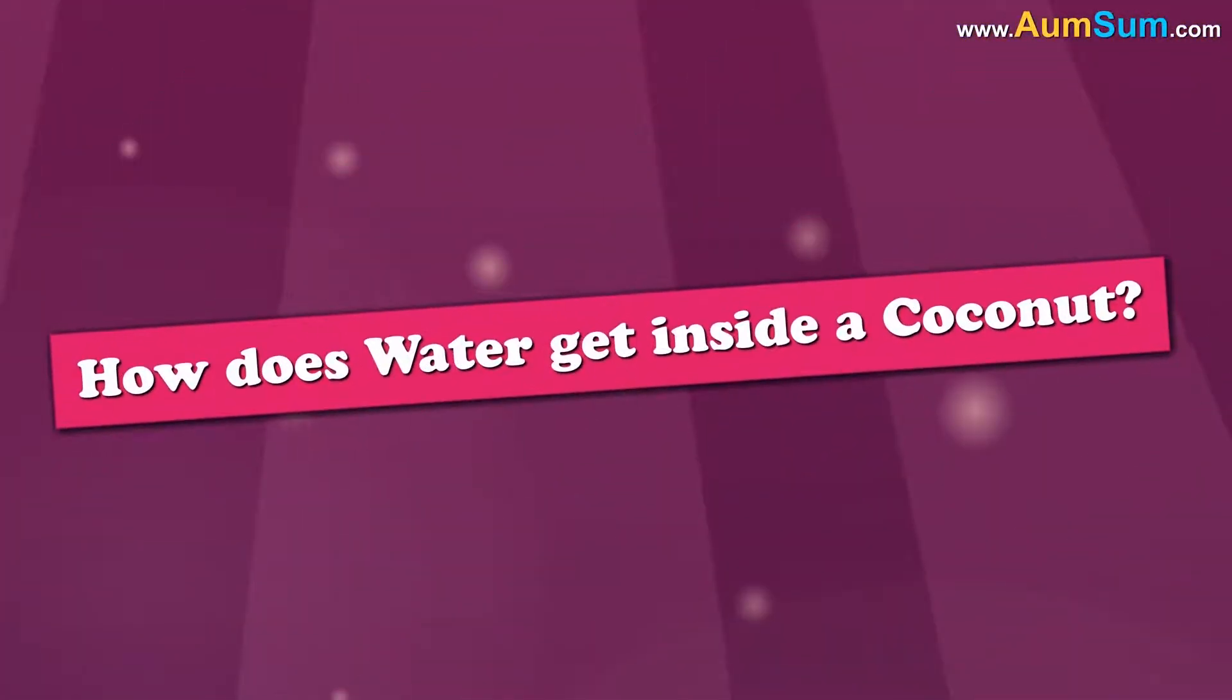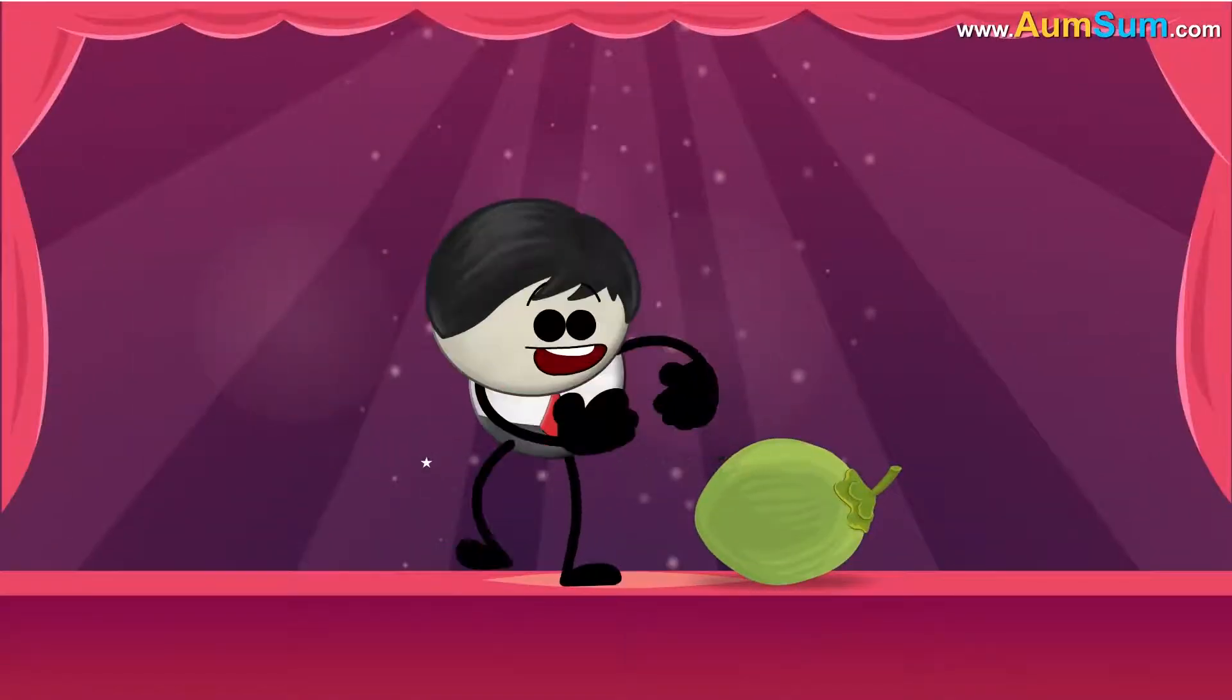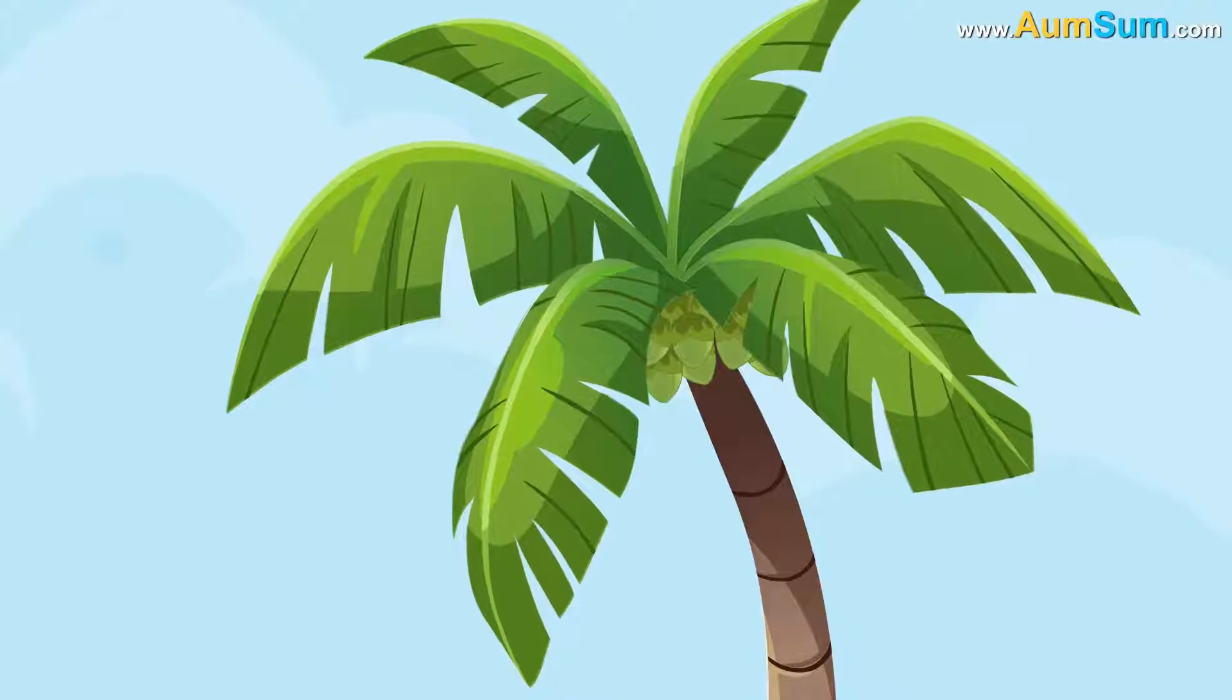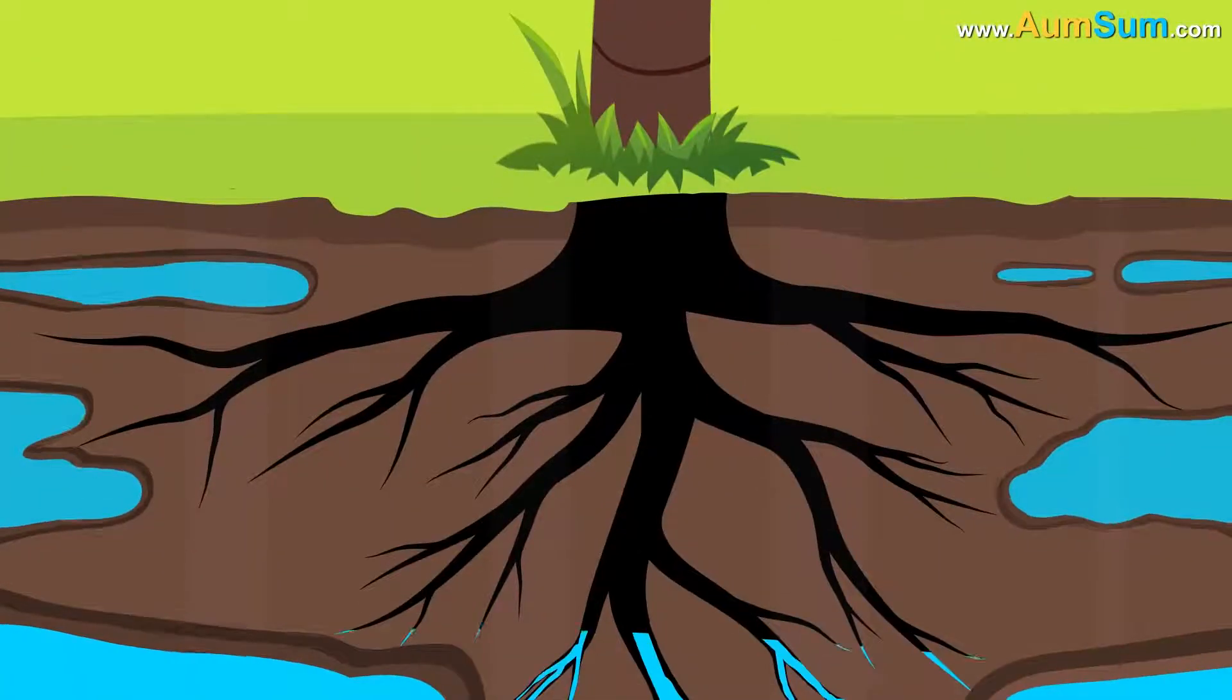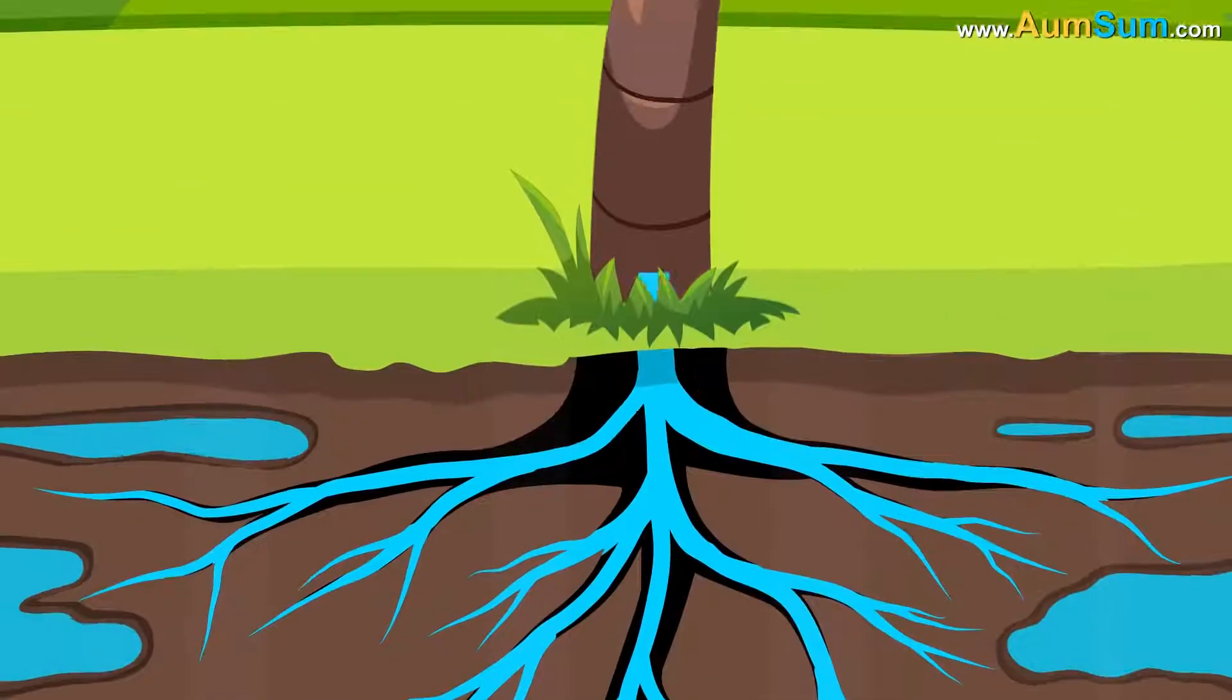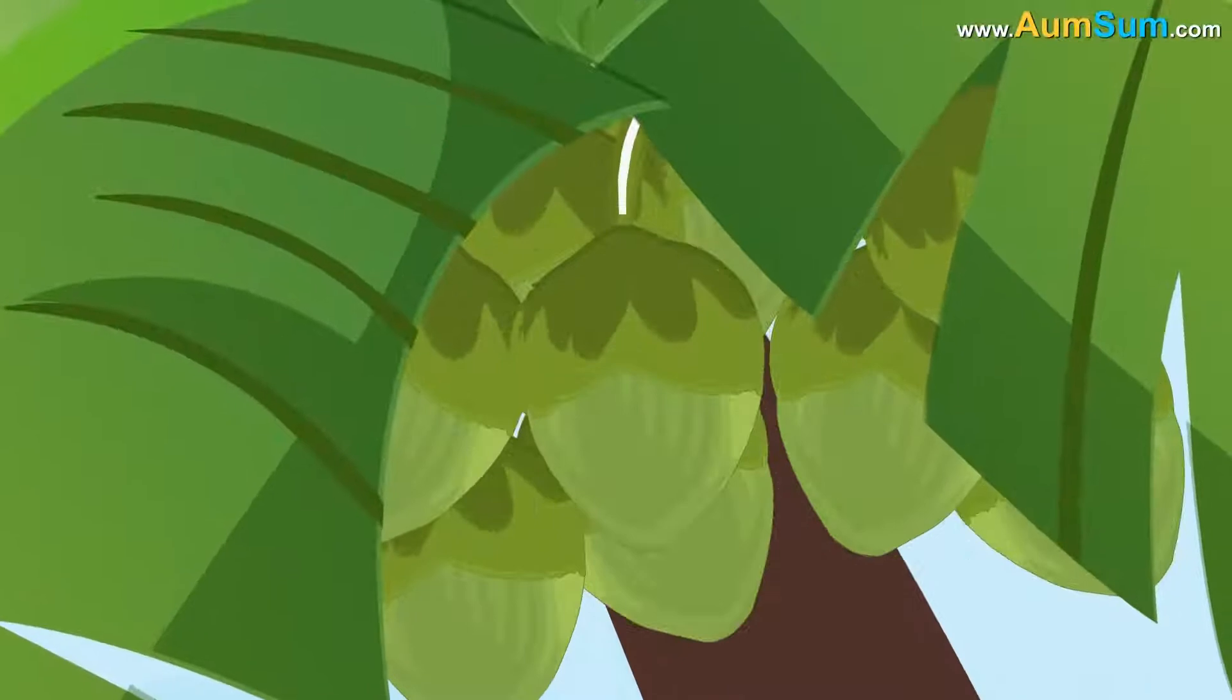How does water get inside a coconut? Simple. I put it inside using magic. Oh AumSum. Firstly, roots of the coconut plant absorb water from the soil by a process called osmosis. This water is then transported to different parts of the coconut plant. Some of it reaches the coconut.